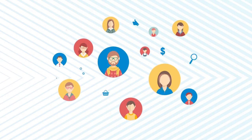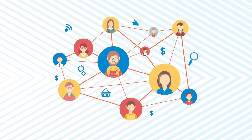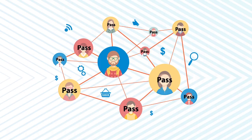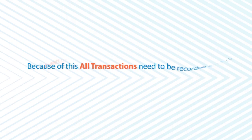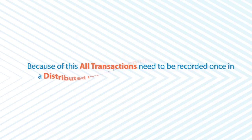Triple entry accounting solves these problems because there is only one ledger and that is on the blockchain. Because of this, all transactions need to be recorded once in a distributed ledger that counterparties can also use.